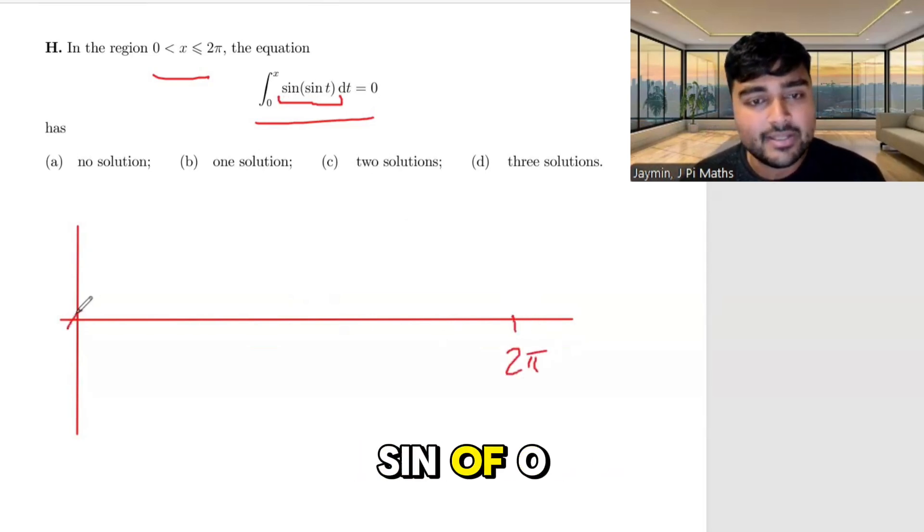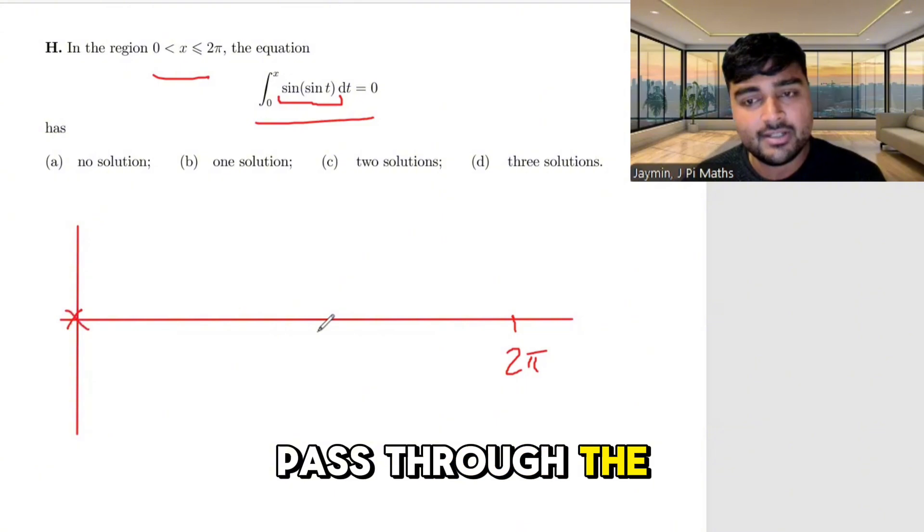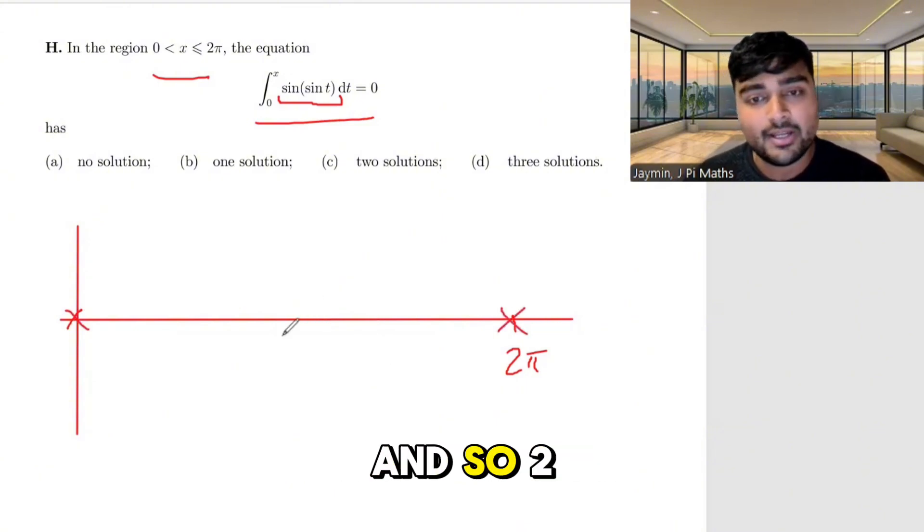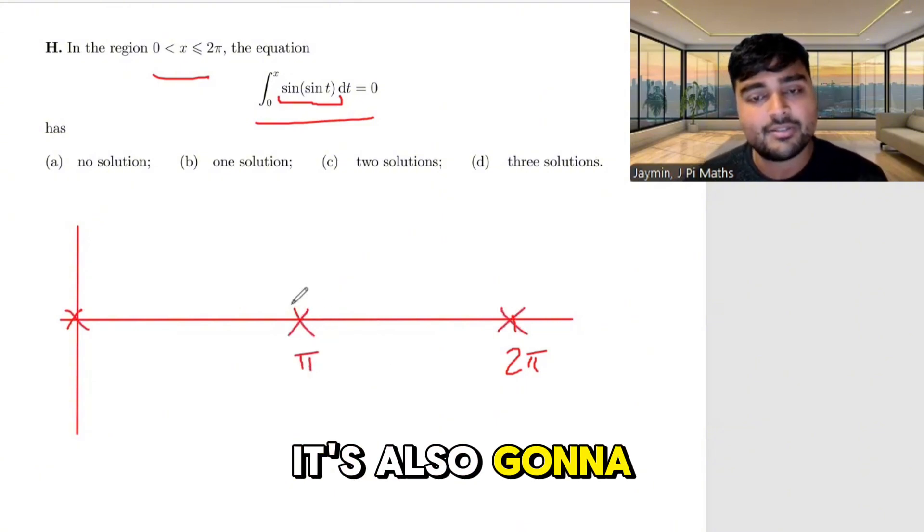Well, when t is 0, sine of sine of 0 is 0, so it's going to pass through the origin. It's also going to pass through 0, sorry, 2 pi is 0, and it's also going to pass through at pi.